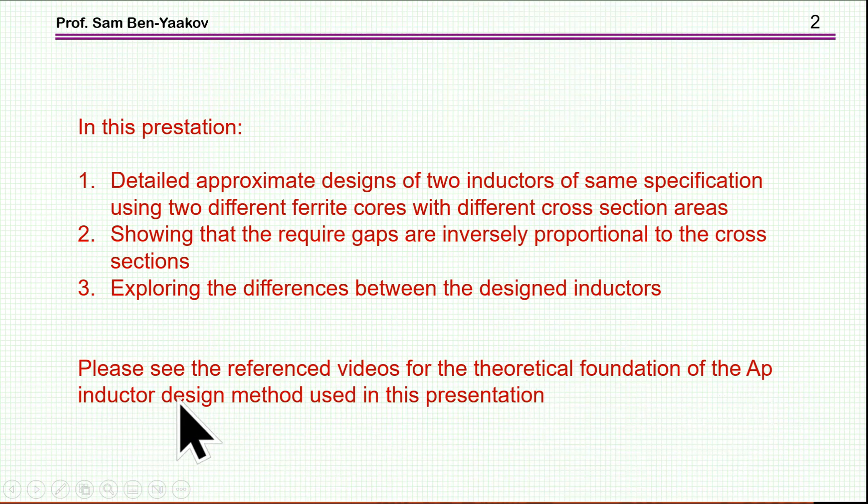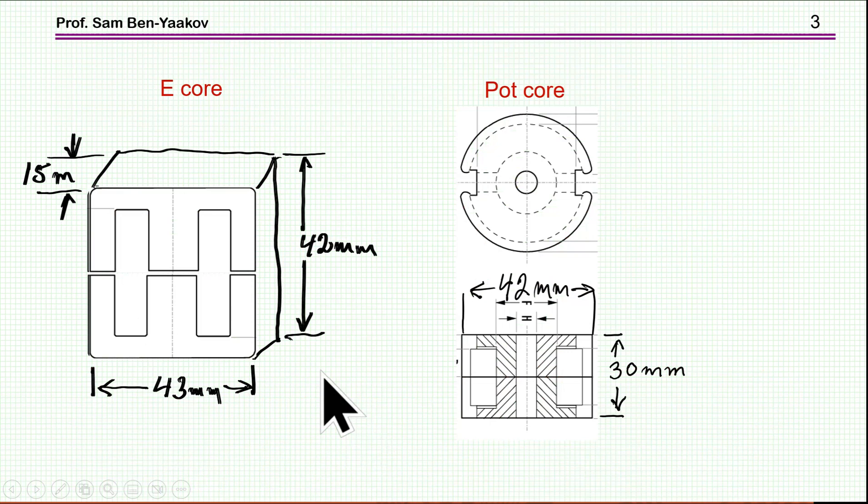Please see the reference videos for the theoretical foundation of this AP Inductor Design Method that I'm using here without really deriving all the equations. So I've chosen two cores which are applicable to a specific design and according to the AP Design Method are supposed to give us a design for same specification of an inductor. This is an E-core and this is a pot-core.